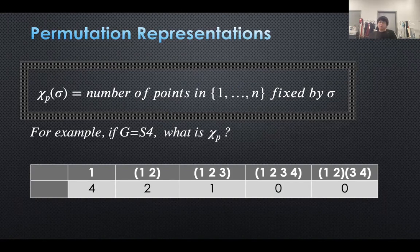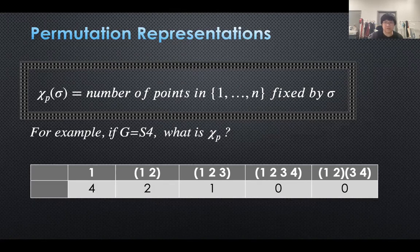For both (1 2 3 4) and (1 2)(3 4), no points are fixed by these elements, so the answer should be 0. It's very clear.